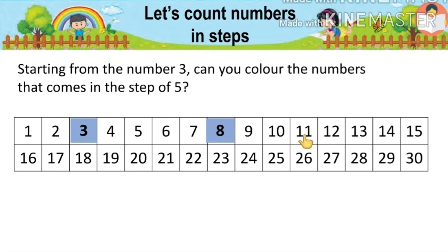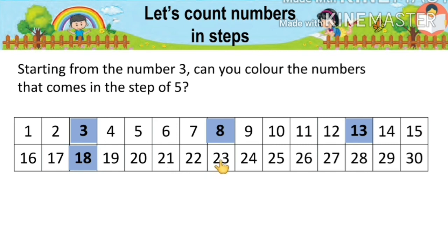One, two, three, four, and five — we get thirteen. Again we count five steps: one, two, three, four, five — we get eighteen. Then one, two, three, four, five — we get twenty-three, and we color twenty-three. Then one, two, three, four, and five — we get twenty-eight. We color twenty-eight. We have finished this activity — we have colored all the numbers in steps of five.